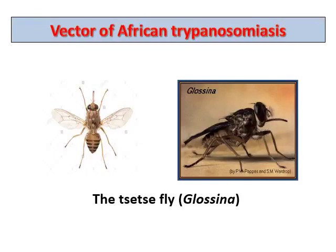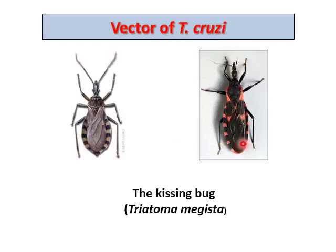The vector of Trypanosoma cruzi — American trypanosomiasis — is the triatomine bug, also called kissing bug or cone-nose bug or Triatoma megesta. It is a compressed bug with two wings and red markings on its body. These are all names for the vector of Trypanosoma cruzi.